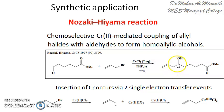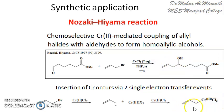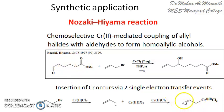The product is a homoallylic alcohol, because the OH ends up one carbon away from the allyl group. The organochromium reagent is formed in situ: chromium chloride and the allyl halide are both added to the reaction pot, they react to form the organochromium complex, which then adds to the aldehyde.